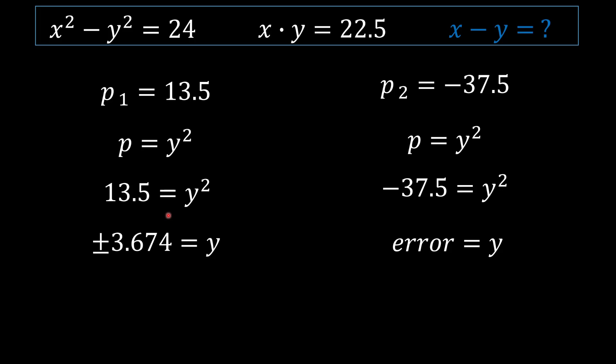So we're going to square root our p value to obtain our two y variables. Because when you square root, you're going to have a positive and a negative. And notice on the left-hand side, we're going to have a positive and minus 3.674, right? And on the right-hand side, we can't really square root our negative. So you're going to have an error. So really, what we have over here is two solutions only.